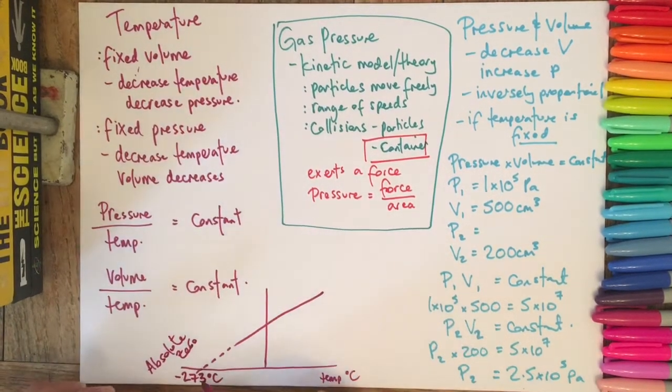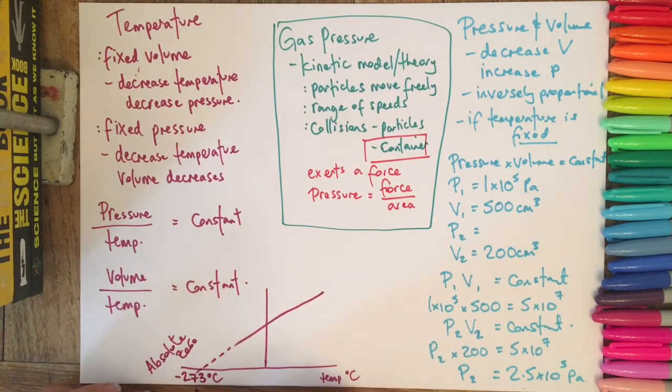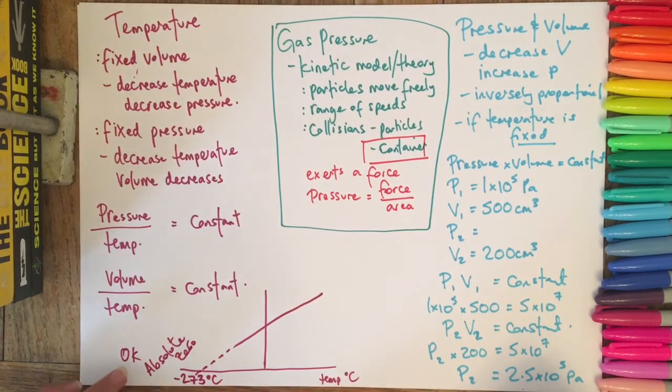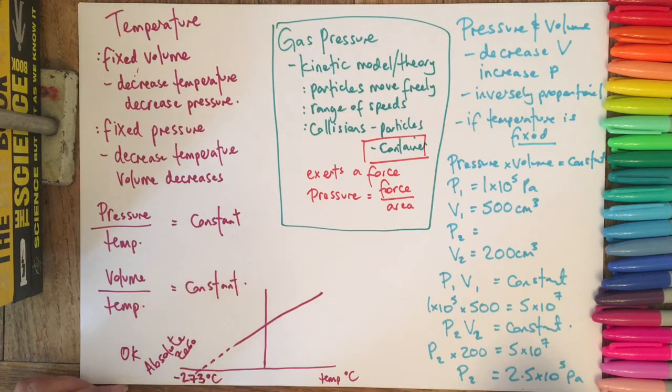And this would be zero on what's called the Kelvin scale. It's not degrees Kelvin, it's just zero Kelvin. And the Kelvin scale and the Celsius scale, you need to be able to convert from one to the other. So it's just a case of either adding 273 or minusing 273 depending on which way you're going.